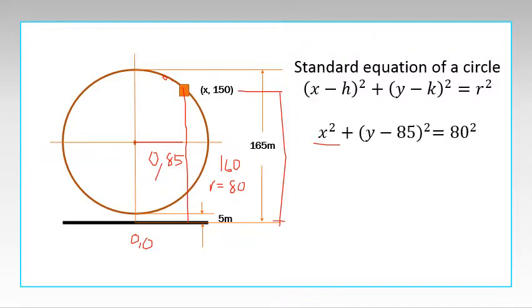Your y-value is 150. We can substitute it to get just one unknown variable. We know that the value of y is 150. Substituting, we have x² + (150 - 85)² = 80².